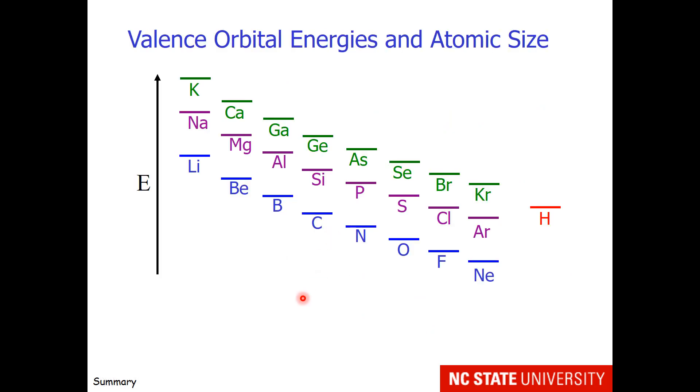This tends to be a more challenging question for students. So here is a summary of valence orbital energies and atomic size. If we consider the nucleus at the same location for all of these valence orbitals, we see that lithium, sodium, and potassium have orbitals that are far away from the nucleus and large radii. As we go from left to right on the periodic table, in the upper right corner,